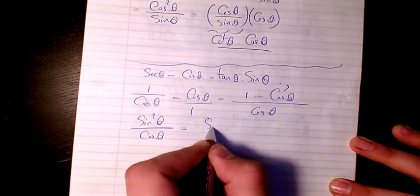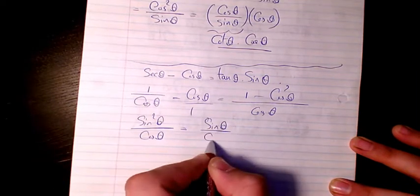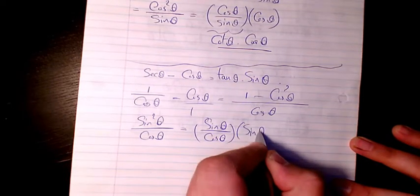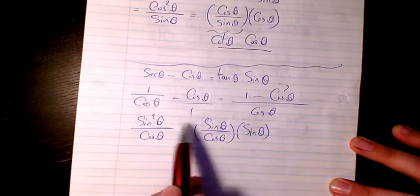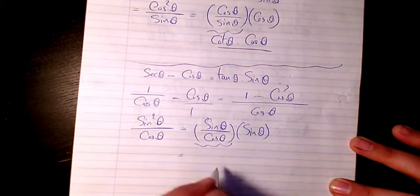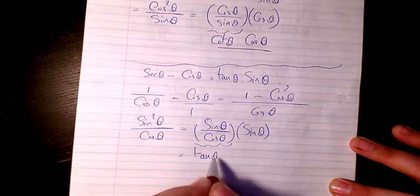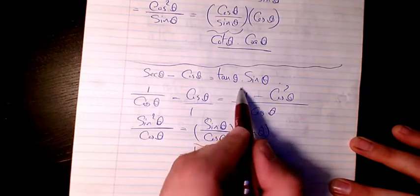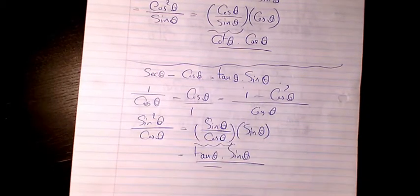The sine squared, it's going to be sine theta divided by cosine theta multiplied by sine theta. So basically I decompose this sine squared. So sine theta divided by cosine theta is tan theta multiplied by sine theta. So as you see here, that's proven. That's the right hand side of the equation.